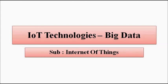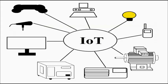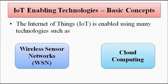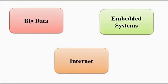We know that for the implementation of Internet of Things, the important technologies are wireless sensor networks, cloud computing, big data, embedded systems, and the Internet — it just brings it all together. In this video we are going to discuss about big data.